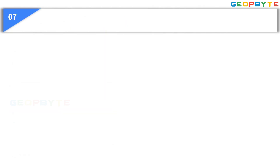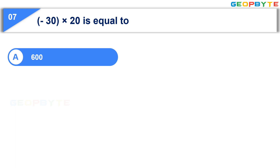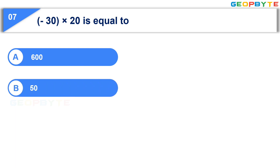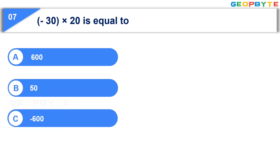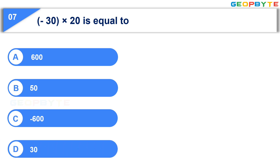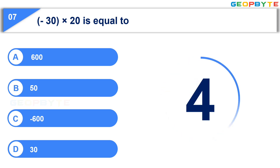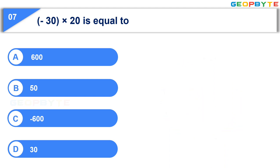The seventh question: Minus 30 multiplied by 20 is equal to — Option A: 600. Option B: 50. Option C: minus 600. Option D: 30. Your time starts now. Now, your time is up. And the correct answer is Option C: minus 600.